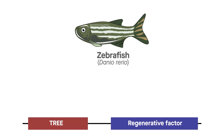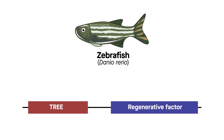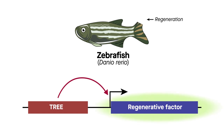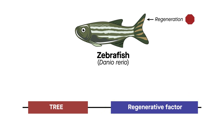Zebrafish TREEs are promising mediators of such precise control. TREEs are short sequences of genetic instructions that trigger the expression of downstream regeneration-related genes in injury sites. These instructions help provide zebrafish with remarkable regeneration potential, and importantly, the instructions include how to turn off the genes as healing is completed.